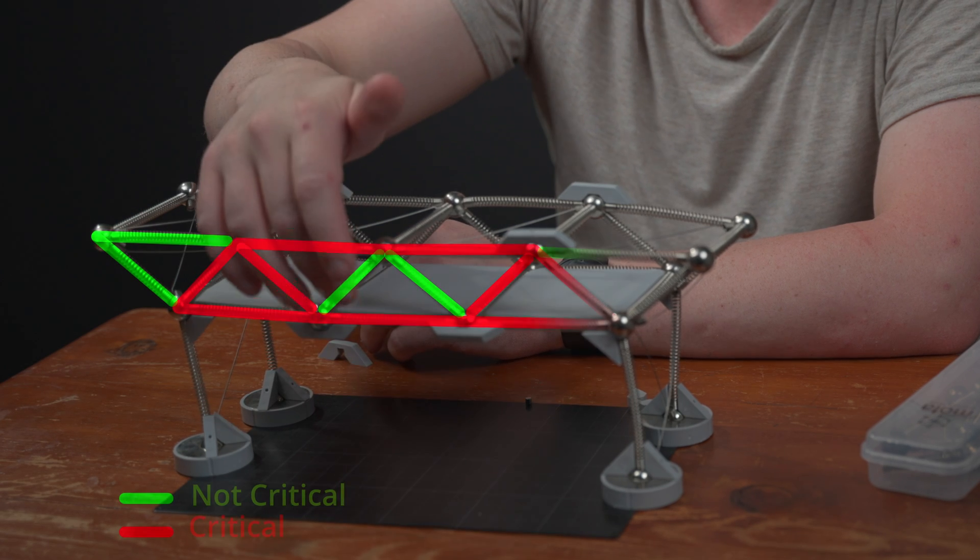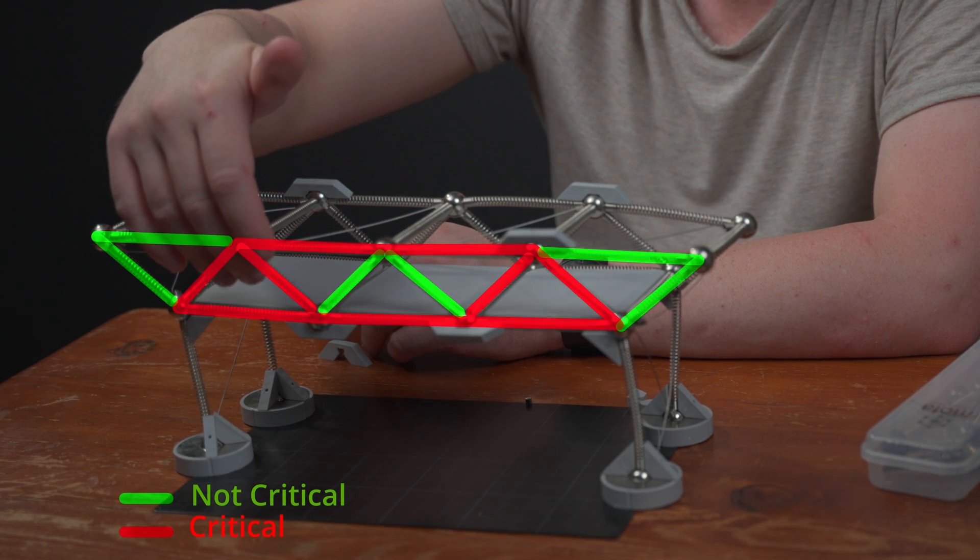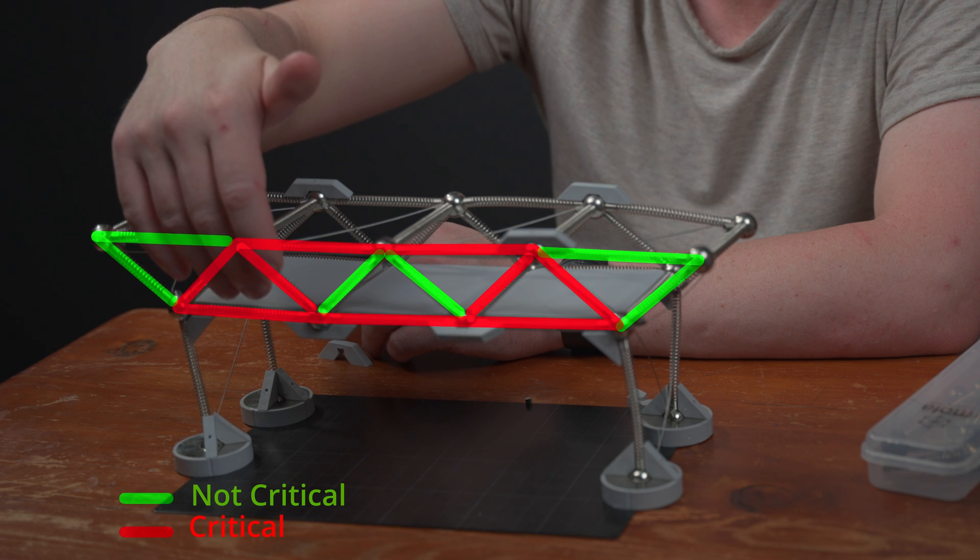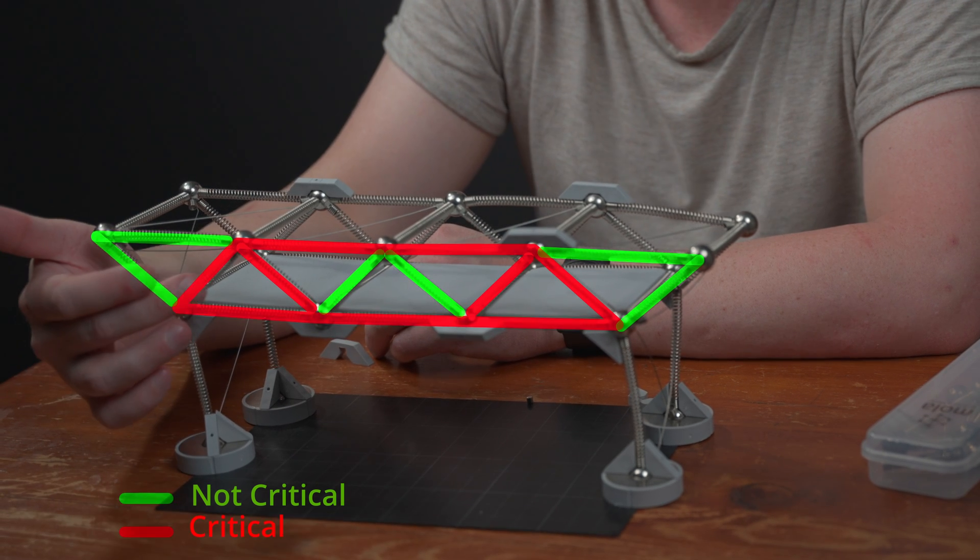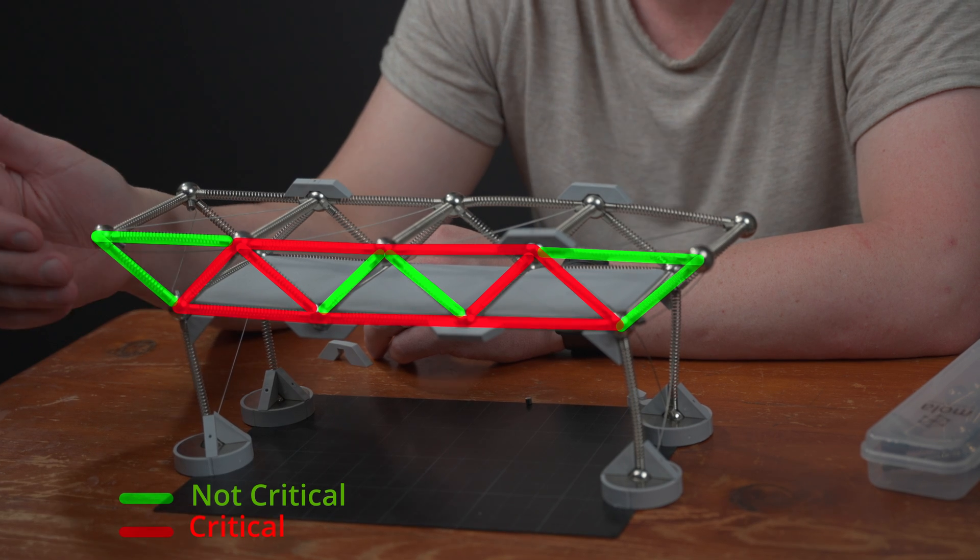This shows us where the critical elements in the structure are. Where we need to size up so these ones need to be stronger. We need more robustness as we never want these ones to fail, because you can't have really one single element lead to catastrophic collapse in a big bridge like this.